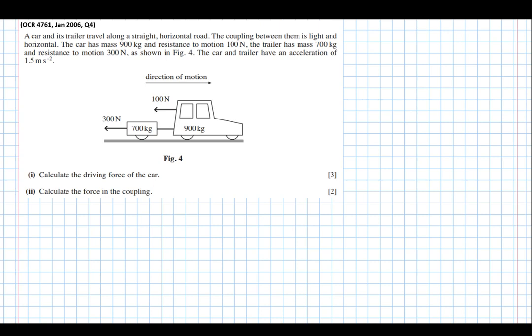In this tutorial we're going to have a look at connected particles on a horizontal surface. A car and its trailer travel on a straight horizontal road. The coupling between them is light and horizontal. The car has a mass of 900 kilograms.